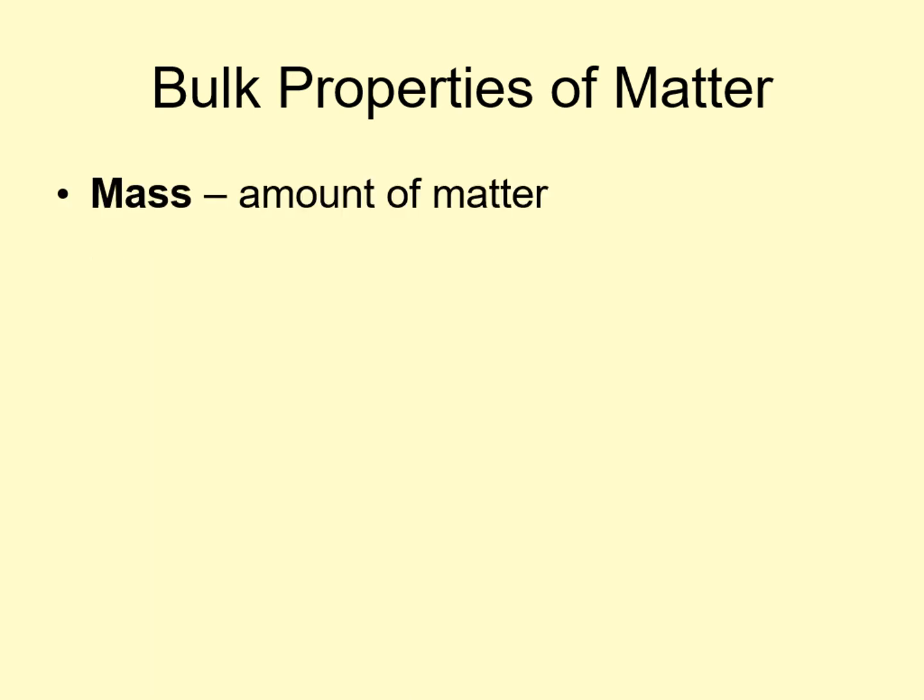While we're looking at the behavior of matter, we should define a few basic terms we use a lot in this course. First, we have mass — this is the amount of matter in an object. As we saw in the last chapter, it's not the same thing as weight. Weight is the force you feel from gravity; while weight depends on mass, it also depends on how strong gravity is. If you went to the moon, your weight would be a lot less because the moon has weaker gravity than Earth, but your mass would be the same — you'd still be made of the same stuff. The standard units of mass are grams and kilograms.